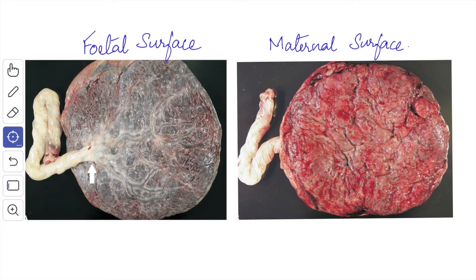The fetal surface is smooth and it is covered by the amnion, and presents the attachment of the umbilical cord. The umbilical cord is attached to the fetal surface close to its center. Beneath the amnion, you have the umbilical vessels which radiate from the cord. Sometimes you have the extra-embryonic part of the yolk sac, known as the umbilical vesicle, found beneath the fetal surface close to the umbilical cord, connected by a fibrous remnant of the vitello-intestinal duct.